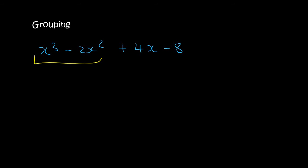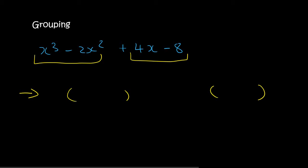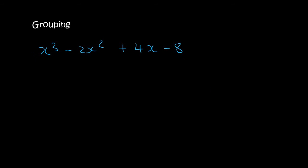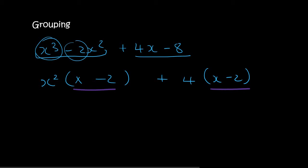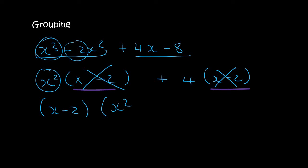Here's another one. We're going to group the first two — it won't always be like that, but with practice you'll start to realize. Remember: if the two brackets you form are different, then you've grouped them incorrectly. If we group the first two together, there's a common factor of x squared, leaving x minus two. For the second pair, you can take out a four, leaving x minus two. Those are the same, so we take out x minus two as a common factor, and you're left with x squared plus four.